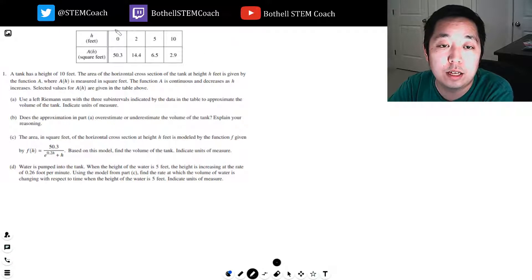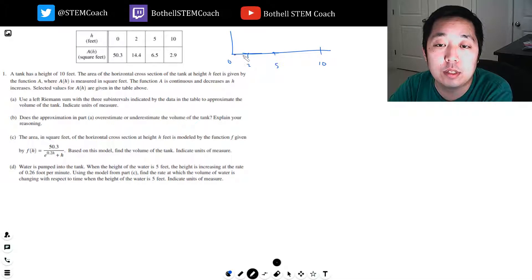Okay, so if I kind of think of the h coordinates, I got 0, 2, 5, and then like 10 over here, right? And so my three sub-intervals are 0 to 2, 2 to 5, and 5 to 10 because that's just what they gave me here.